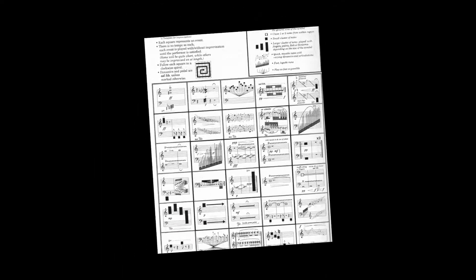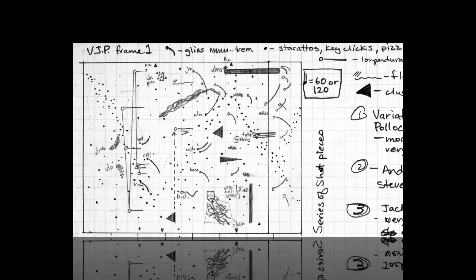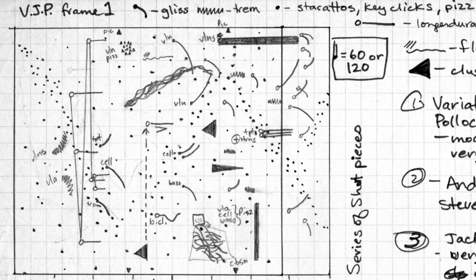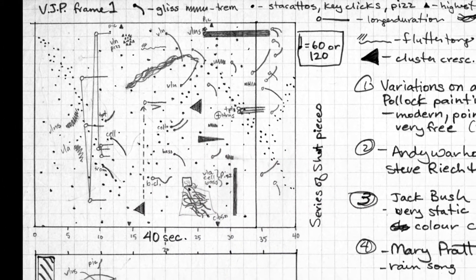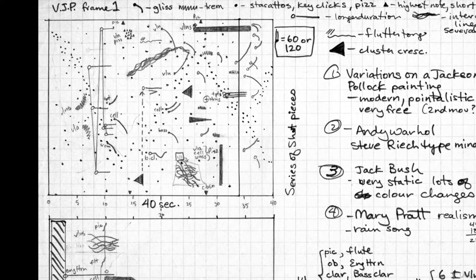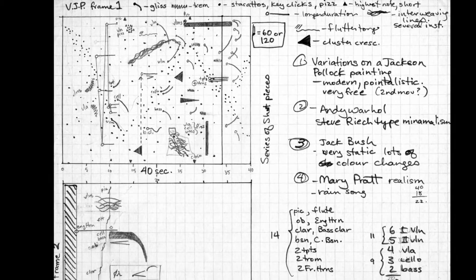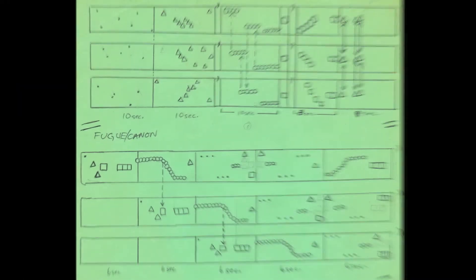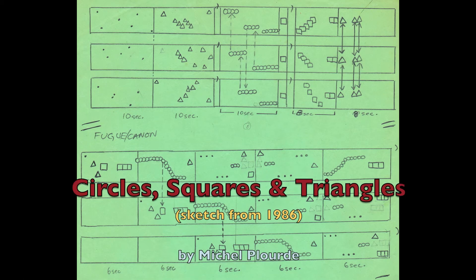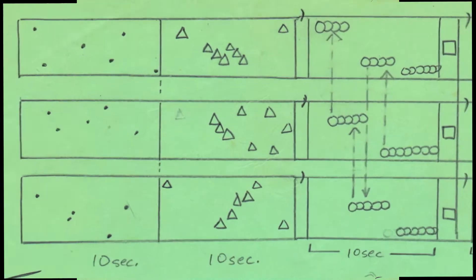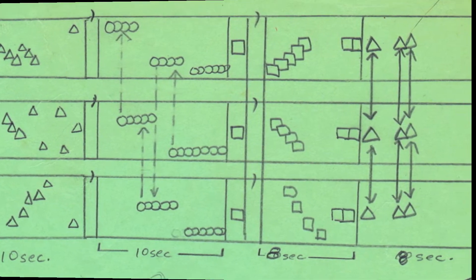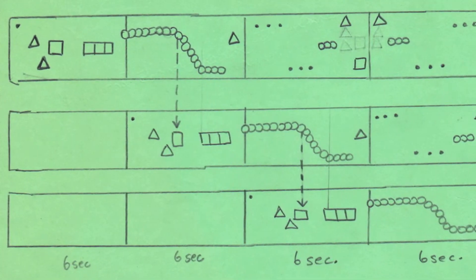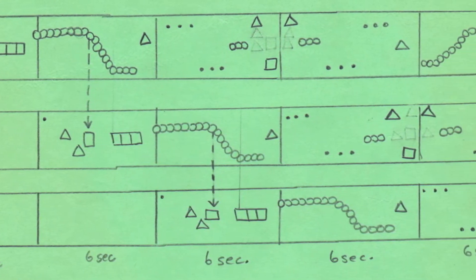I did attempt a couple of picture-oriented graphic pieces. One was called Variations on a Jackson Pollock Painting — it just had random little dots and squiggles. I had thought of actually basing it on paintings by Jackson Pollock, but I never got around to doing that piece. Another piece called Circles, Squares, and Triangles had different shapes: with circles you would do a particular thing in a loop; in a square, you would stop and change; in a triangle, you would do the opposite of what somebody else was doing. I never finished that piece either.